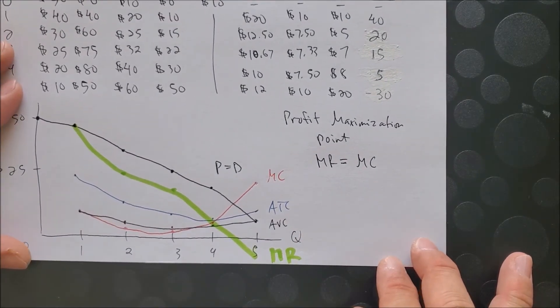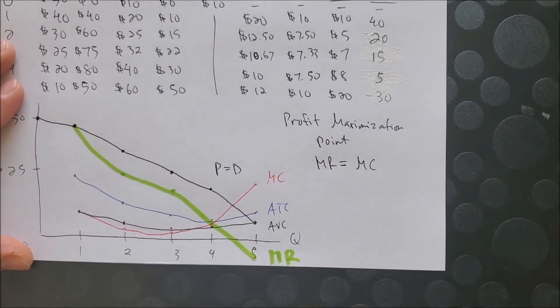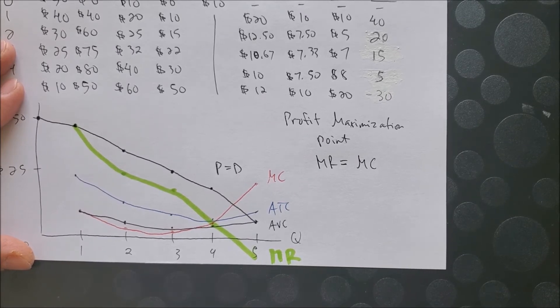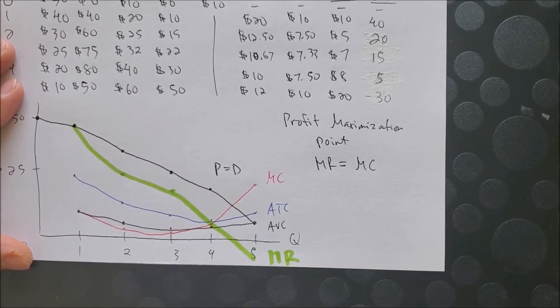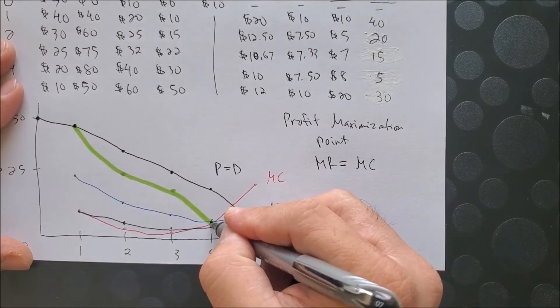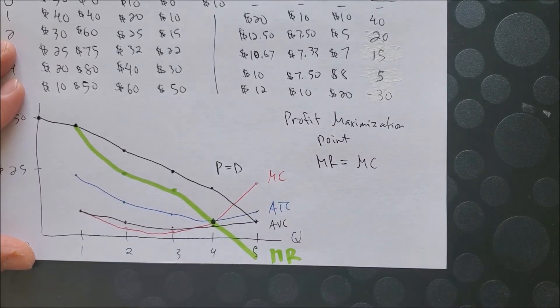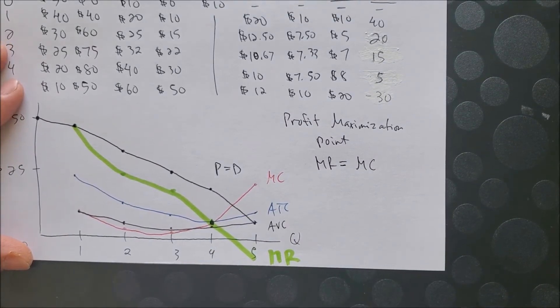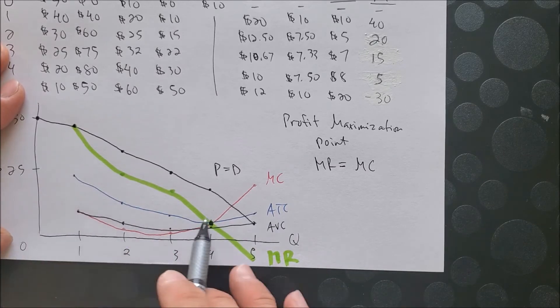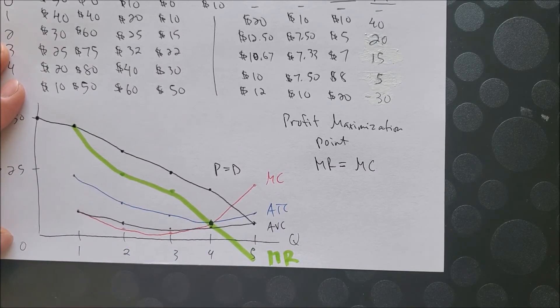So notice how we can also see on our graph, we have MR in green and MC in red. And it seems as if that both MR and MC intersect somewhere around here based upon my graph. So it is hard to read because again, I don't really have the numbers on the Y axis.